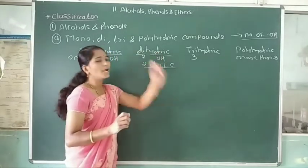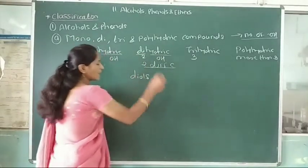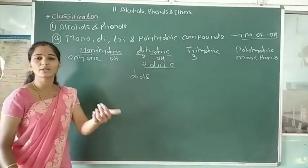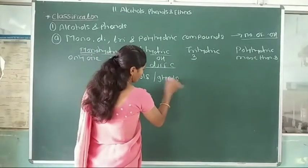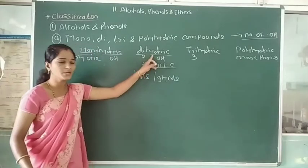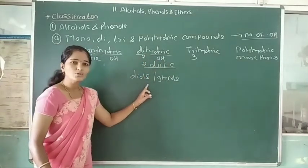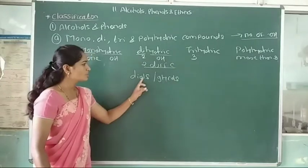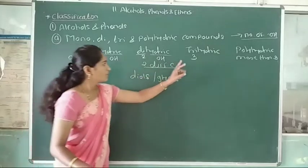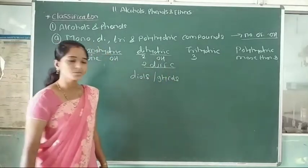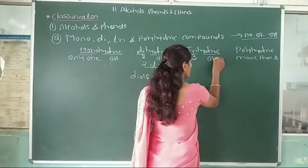Dihydric compounds are also called diols or glycols. Diols or glycols means the compound contains two hydroxy groups. Third, trihydric compounds — tri means three and hydric means OH.